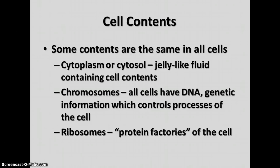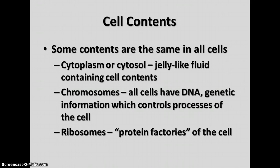All cells share some of the same content. The cytoplasm is present in all cells — a jelly-like fluid with cell contents floating in it. All cells have DNA in the form of chromosomes, which don't always look the way you're used to seeing them but contain all the controls necessary for the cell. All cells also have ribosomes, where proteins are assembled.